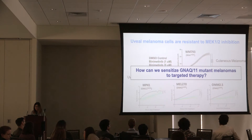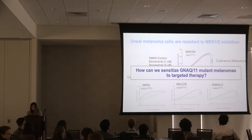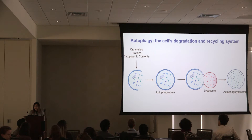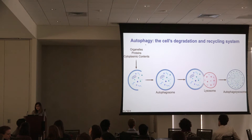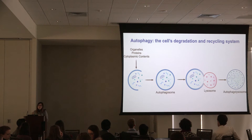Our big question is: how can we sensitize GNAQ and GNA11 mutant melanomas to targeted therapies? Our initial approach was to look at autophagy, because we had previously shown that autophagy is a critical component in the resistance of RAS-driven cancers — cancers with the MAP kinase pathway activated. Autophagy is the cell's natural degradation and recycling mechanism: defective organelles, proteins, and other cytoplasmic contents get sequestered into an autophagosome, which then fuses to a lysosome, and the internal components get degraded and released as macromolecules for other biological processes.